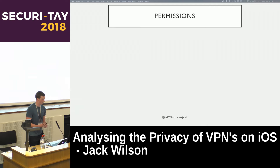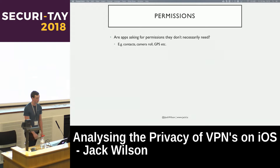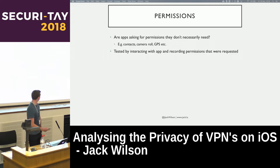Next up was permissions — this was incredibly simple to test. All we wanted to find out was whether apps were requesting permissions they might not necessarily need, and if so, which ones. Just interact with the app and see what it requests. If this were Android I could look inside the APK to see which permissions were declared, but that's not quite so easy on iOS.